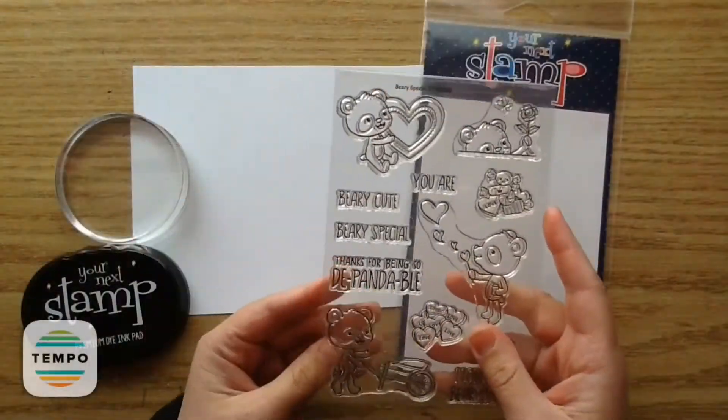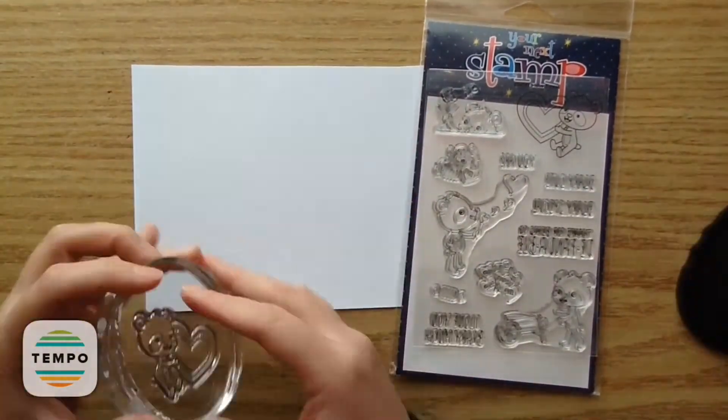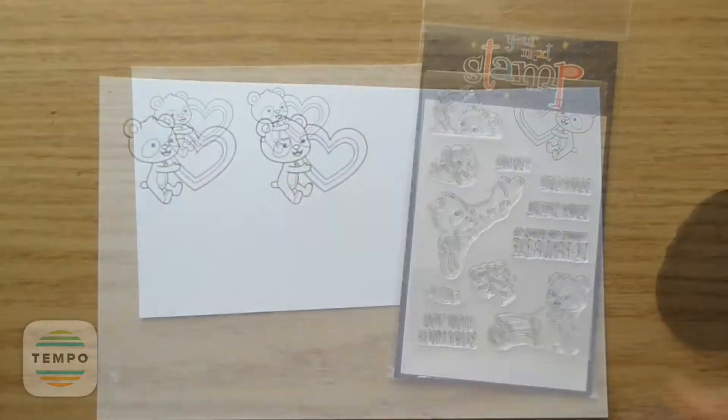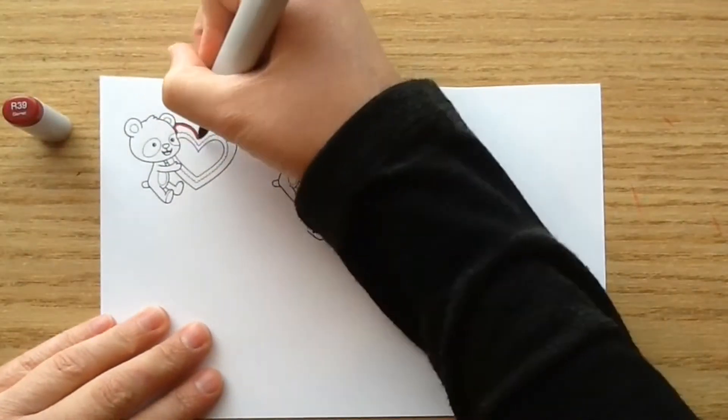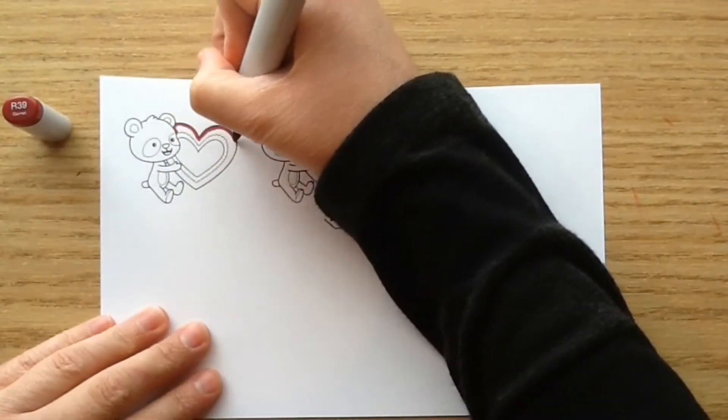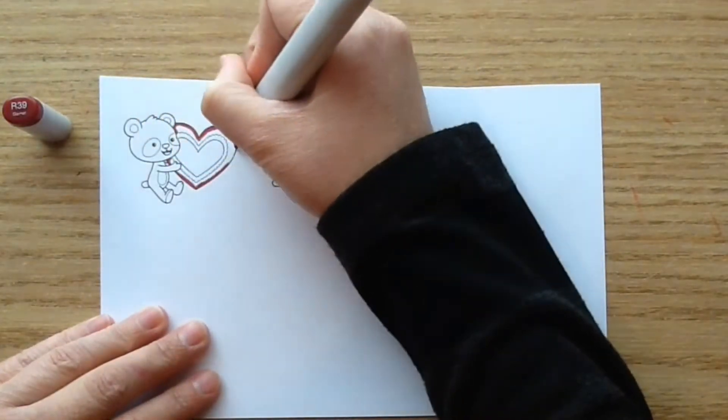So to start out with, I'm going to stamp out my little stamped image here. This one I just fell in love with holding the little heart. And so I'm just going to do two of these so that the lollipops look similar. So I'm taking my red Copic markers and I'm going to just outline the outside of the little heart here. And I'm doing this with my darkest red color.